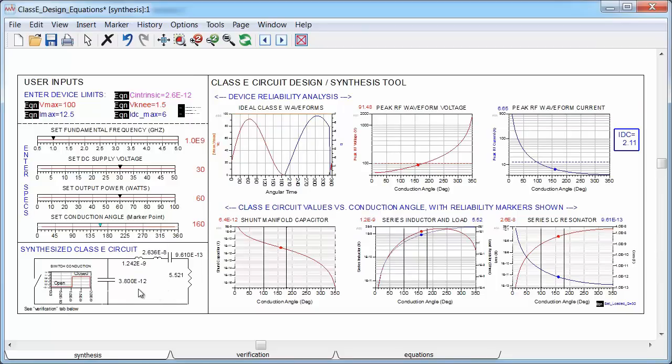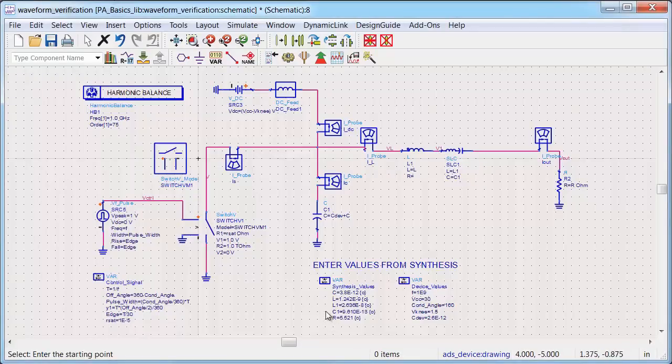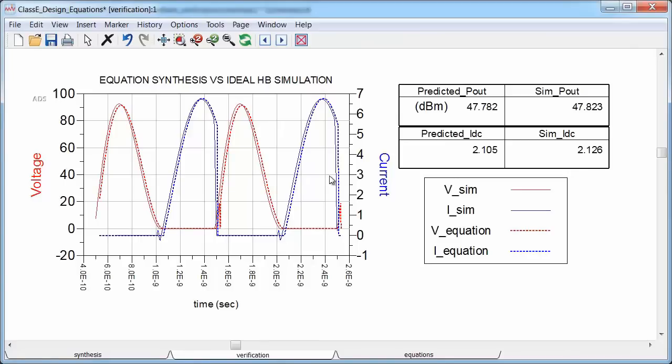Now I have the ideal class E circuit, and the values are shown here, and all I need to do is validate it. I built a simulation bench to do that. It's actually very simple. Basically, I just modeled the transistor using a switch component and brought in the circuit values from the synthesis tool, and I will run a harmonic balance simulation on this to see how well the results agree.